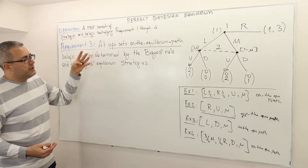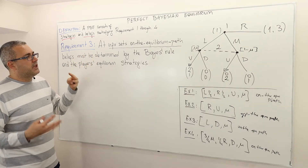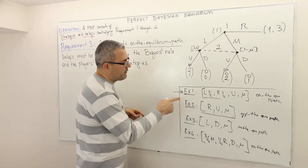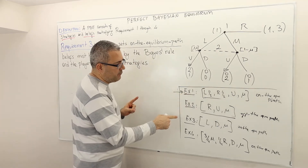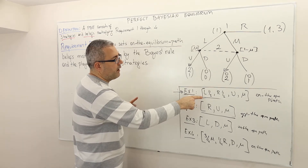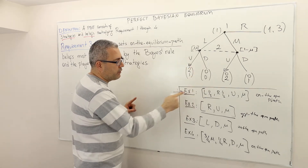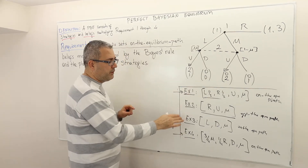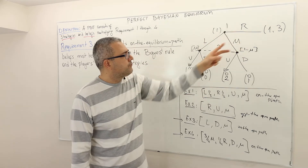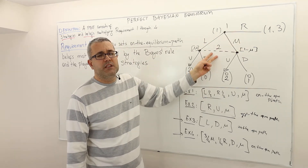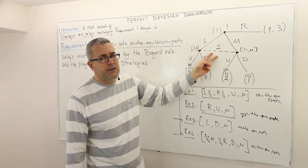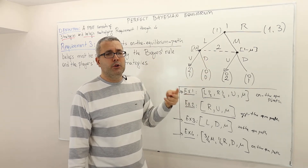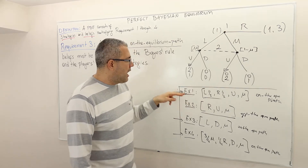Because this requirement is talking about information sets that are on the equilibrium path, we can talk about this specific example — according to this strategy profile, this information set is on the equilibrium path, and this one and this one. In example two, if player one is playing R, the second player's information set is going to be off the equilibrium path, so requirement three puts no restriction on the value of mu.